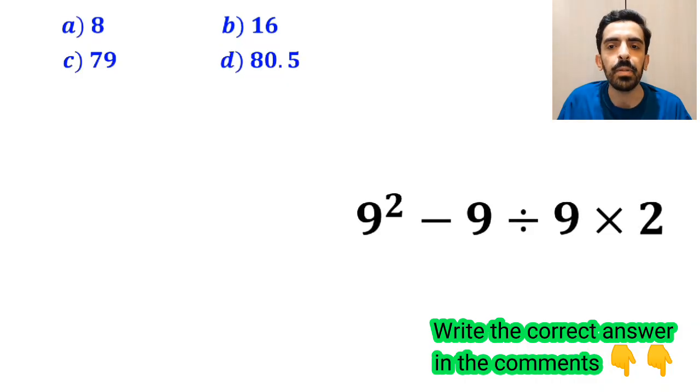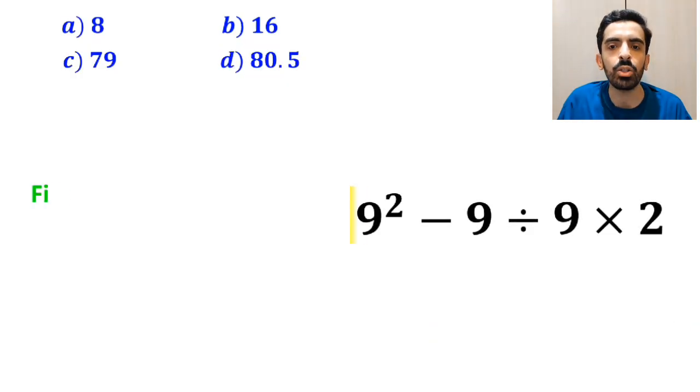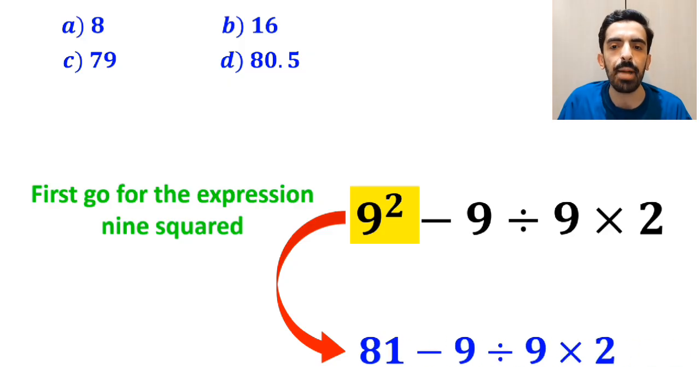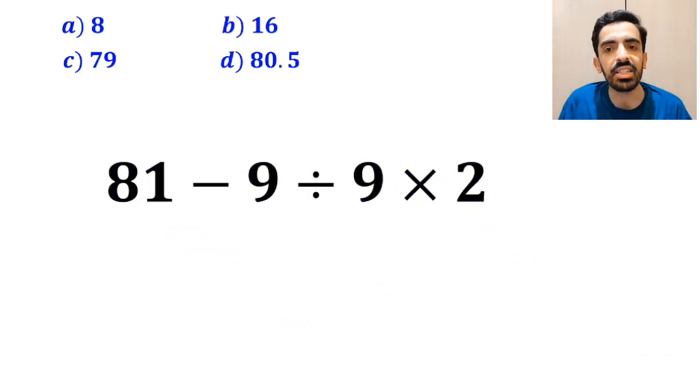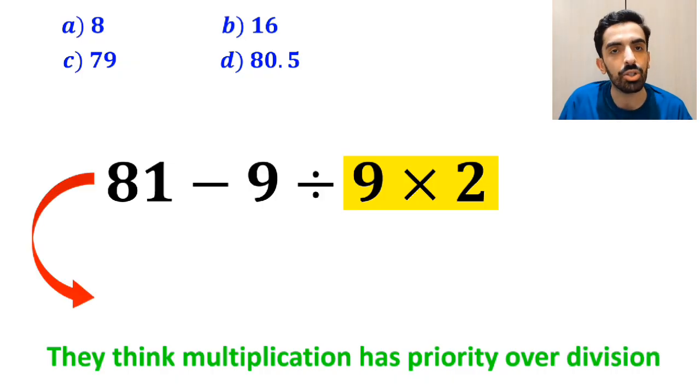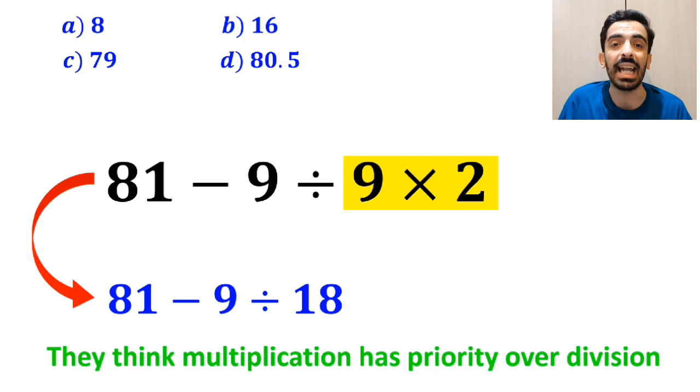Also, some other people to solve this problem first go for the expression 9 squared, and they simplify it to 81 minus 9 divided by 9 times 2. In the next step, they usually go for the multiplication between 9 and 2, because they think multiplication has priority over division. So, they rewrite this expression as 81 minus 9 divided by 18.